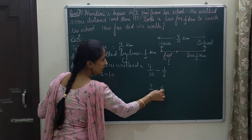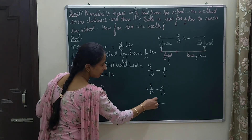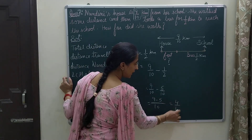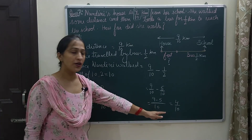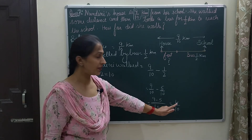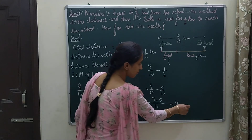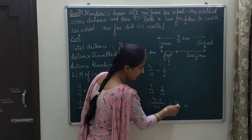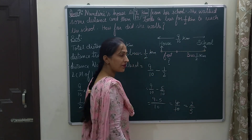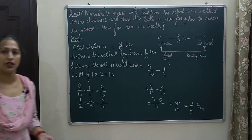With the same denominator, we solve 9 minus 5 and get 4 by 10. As mentioned, whenever your answer is not in its simplest form, you need to simplify it. Here 4 by 10 is not in simplest form, so dividing both by 2 gives us 2 by 5. The unit is kilometers, so the answer is 2 by 5 kilometers. Thank you.